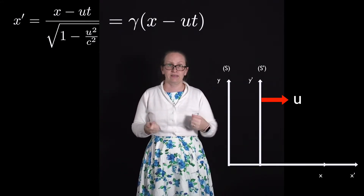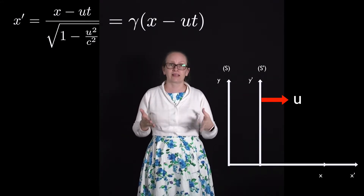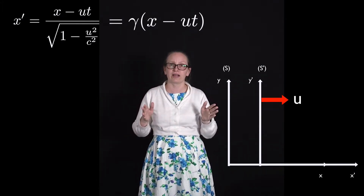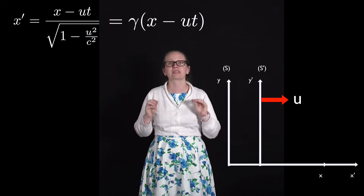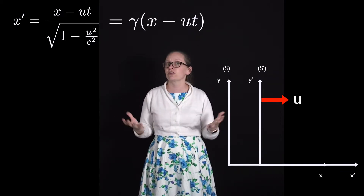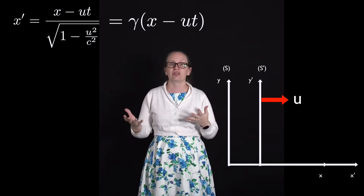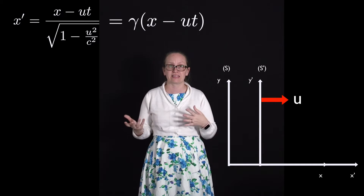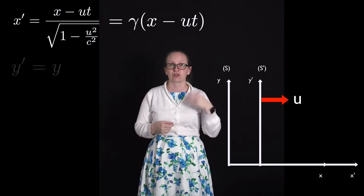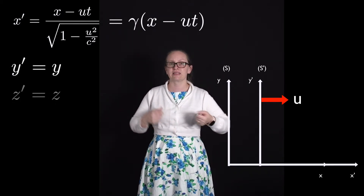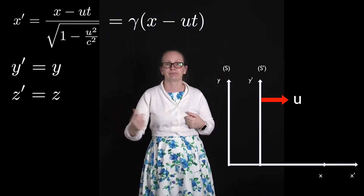There is no relative movement in the Y direction or the Z direction, so there is no change when we transform in these directions. So Y' is equal to Y, and Z' is equal to Z.